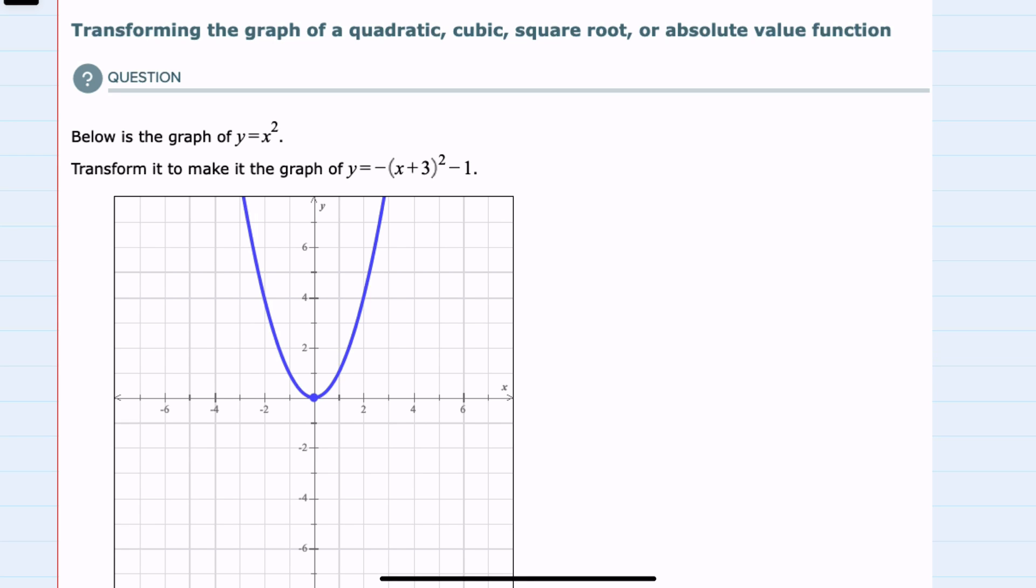In this example, we're given a quadratic, y equals x squared, and we're asked to transform it. I can see that this graph is transformed in three ways.